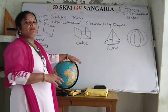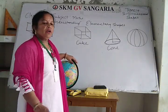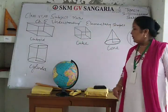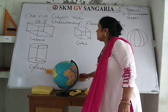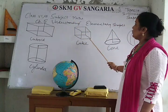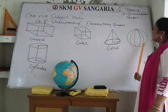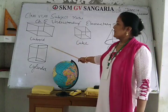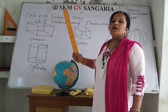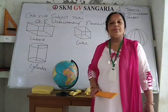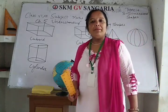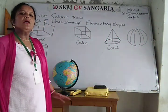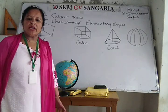So here we can say examples of 3D shapes are: cuboid, cube, cone, sphere, cylinder, and pyramid. These are all called 3D shapes.